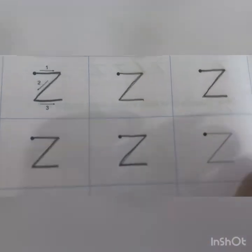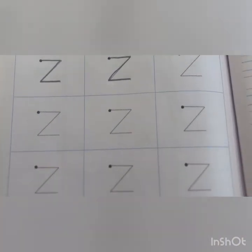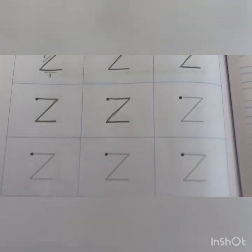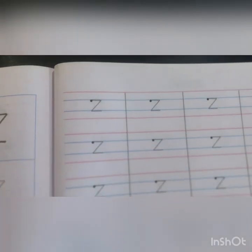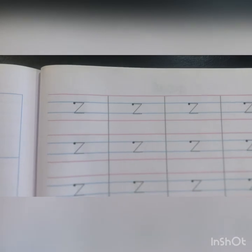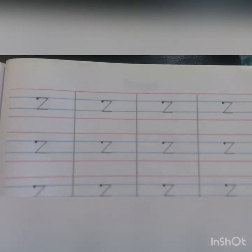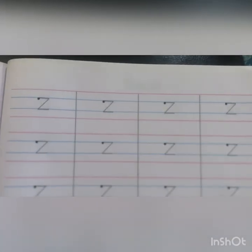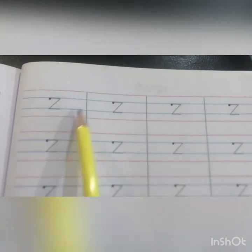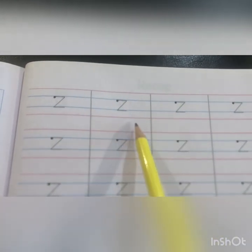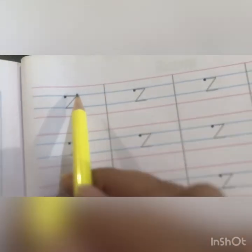In this manner, children, we are going to complete this entire page — page number one zero four. Now children, let's turn to the next page in our Pencil Time English book: page number one zero five. Over here we are going to write Z in the four lines — red and blue lines.